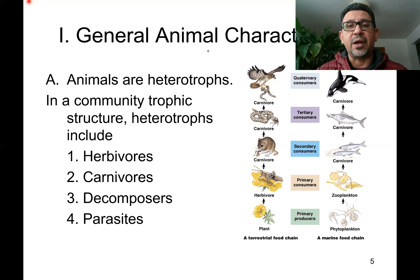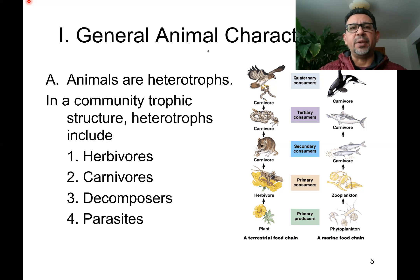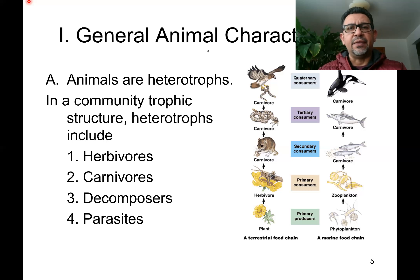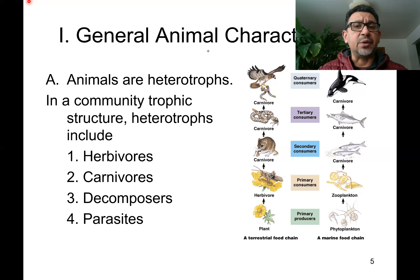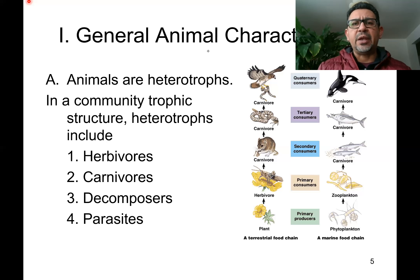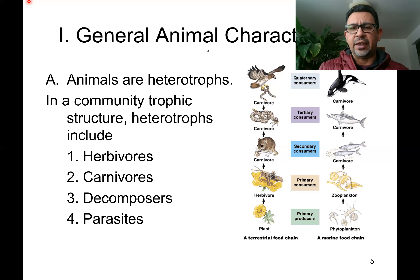Parasites are different from carnivores in that a parasite doesn't immediately kill the host on which it's feeding. External parasites include ticks, mites, and fleas. There are also external parasites like fish that suck the blood of another fish. Parasites can also be internal — such as intestinal worms, or worms living in the cardiovascular system and blood. Depending on which strategy an animal uses, that can be used as a way of classifying animals.